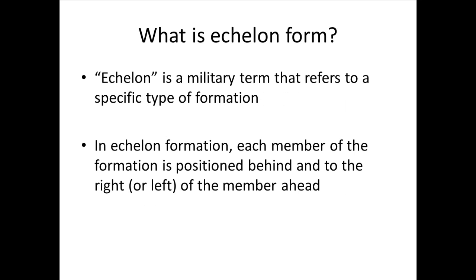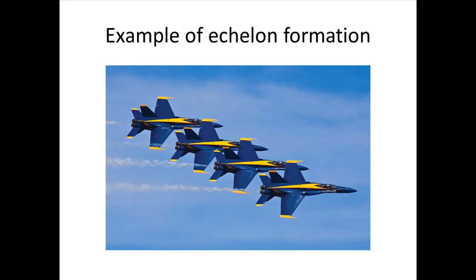So what is an echelon form? Well, echelon is actually a military term that refers to a specific type of military formation. In echelon formation, each member is positioned behind and to the right, or to the left, depending on the type of formation, of the member ahead of them. Here's an example of planes flying in echelon formation — each plane is behind, and in this case to the left, of each plane in front of it.